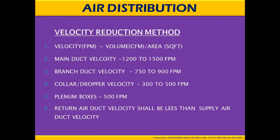The velocity reduction method: velocity is measured in FPM (feet per minute), which equals volume divided by area. Main duct velocities should be between 1,200 to 1,500 FPM. Branch duct velocities should be between 750 to 900 FPM. Collar drop velocity should be between 300 to 500 FPM. Linear bar velocities should be considered at 500 FPM. Return air duct velocity shall be less than the supply air duct velocity.